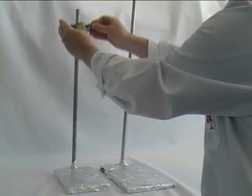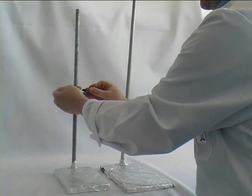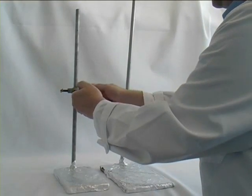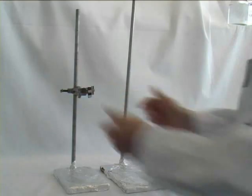This time we need two retort stands. In the normal fashion, we will assemble it with bosses and clamps. Make sure that the opening of the bosses points upwards again.